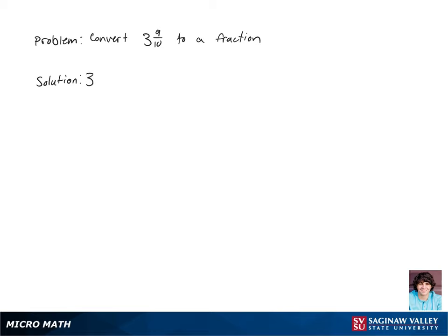Let's convert 3 and 9 tenths to a fraction. Remember that mixed numbers is just addition of a whole number and a fraction. So 3 and 9 tenths is equal to 3 plus 9 tenths.